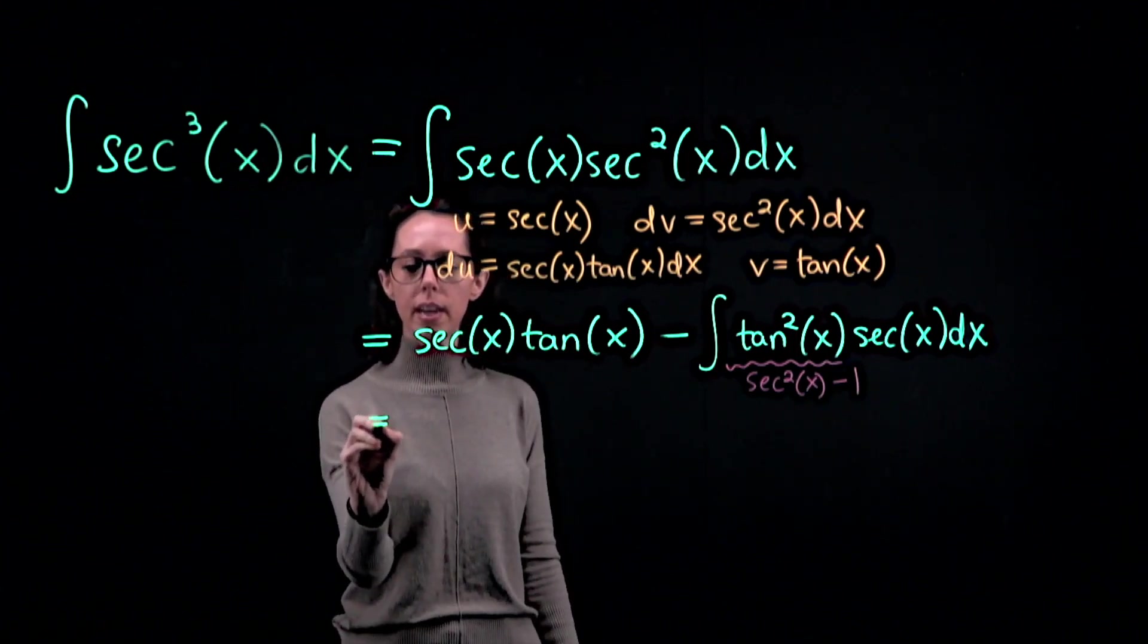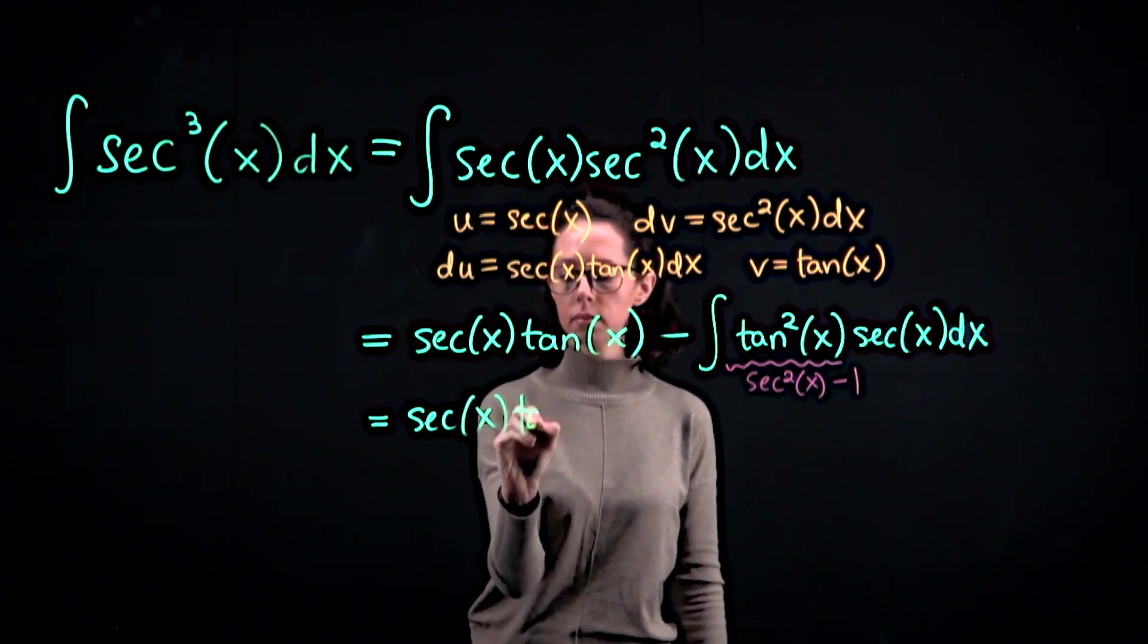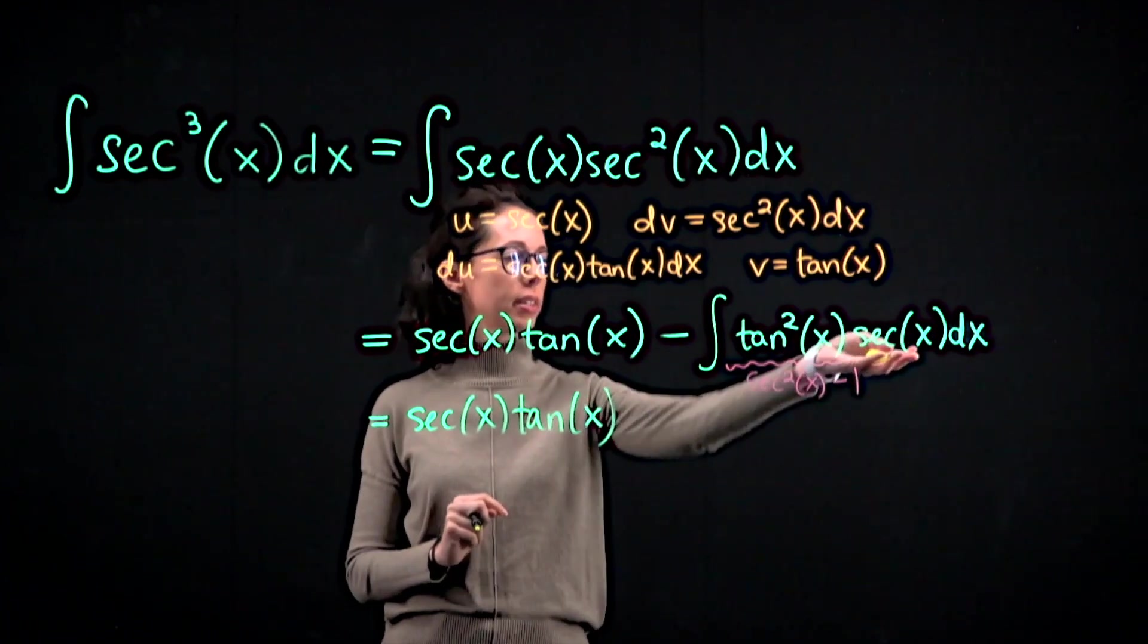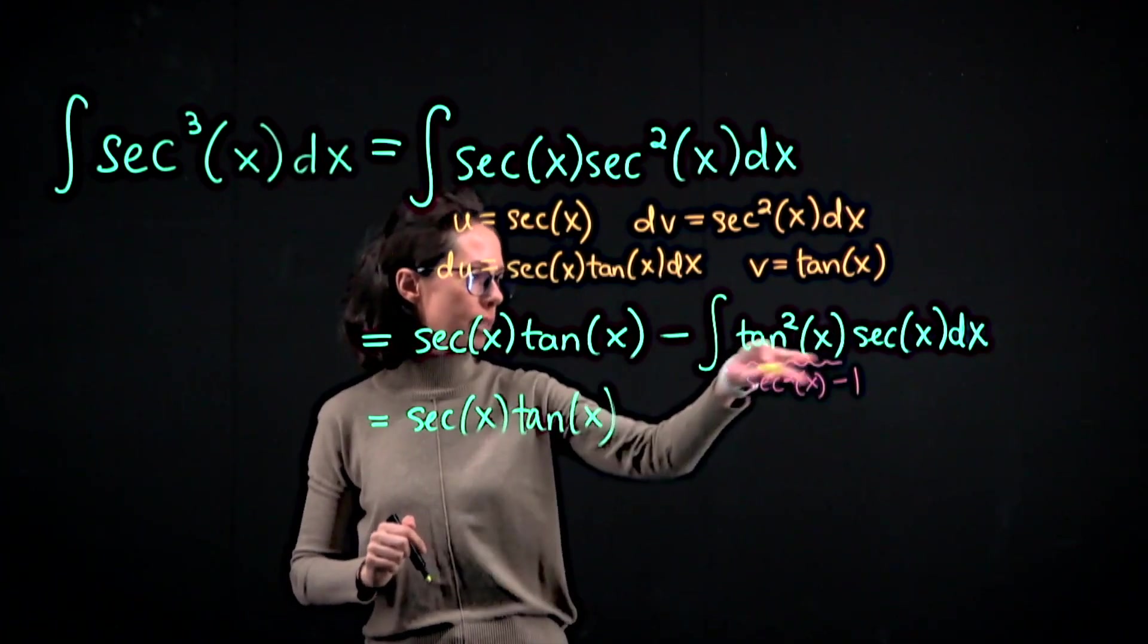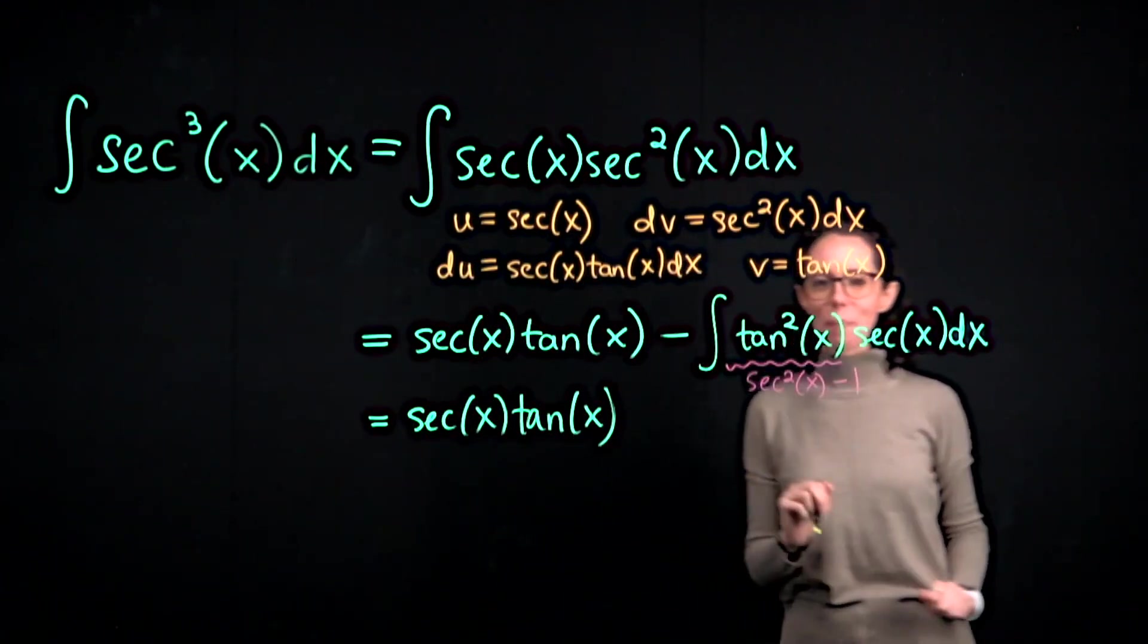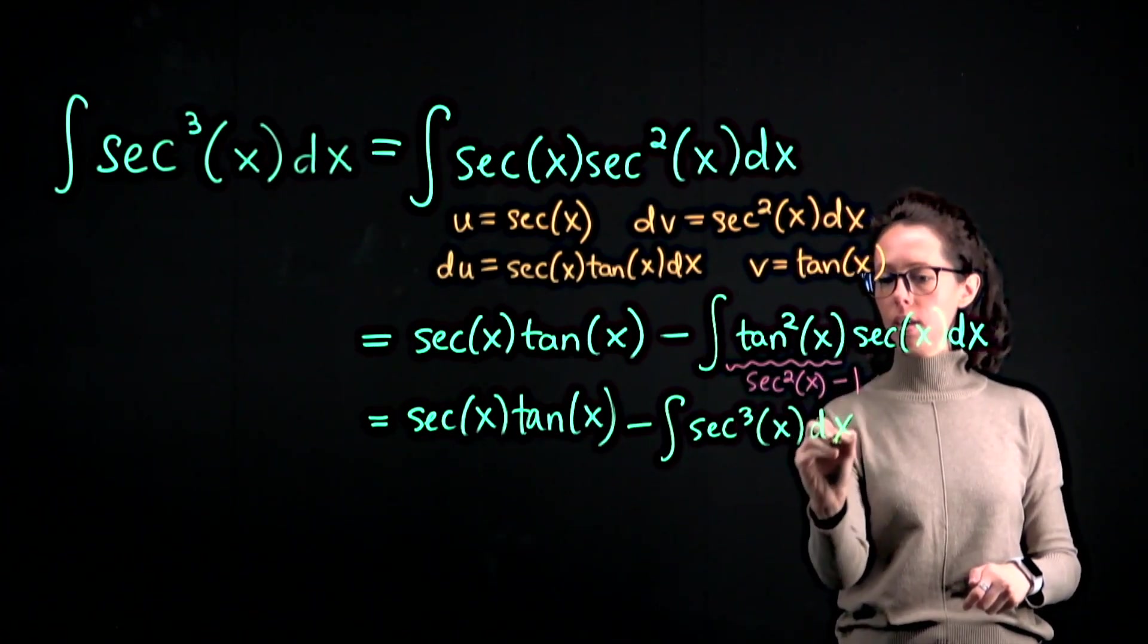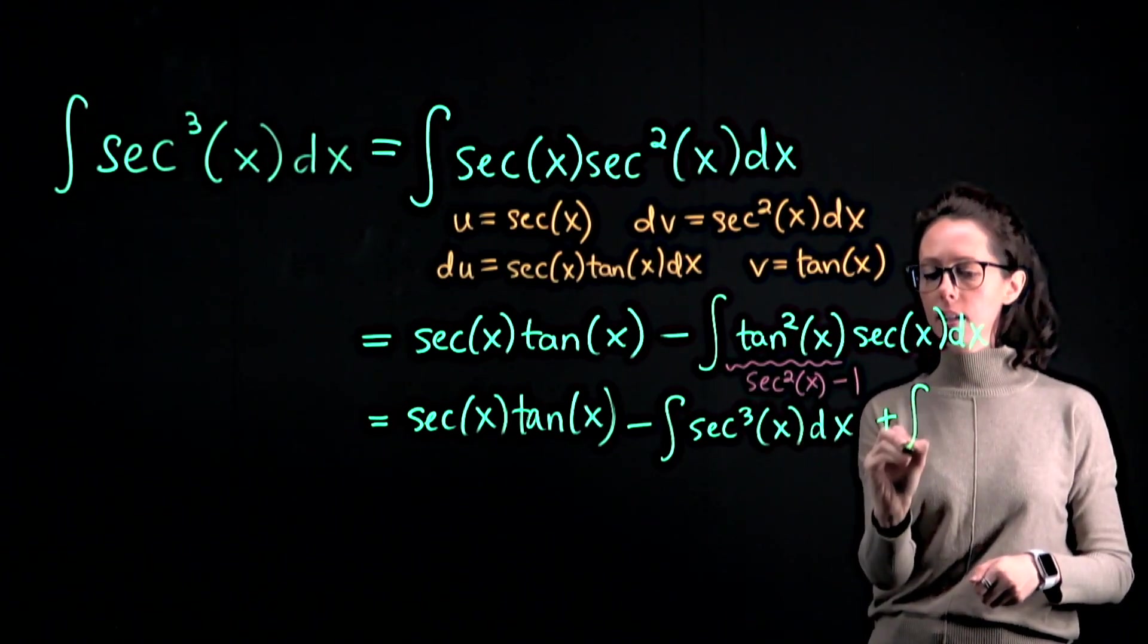All right, so down to the next line we have secant tangent, and then I'm going to distribute this secant of x into this expression. So this whole thing is secant squared x minus one times secant. I'm going to end up with two separate terms separated by the subtraction. I'm going to break this apart and distribute the negative. The first part is going to be minus the antiderivative of secant cubed, and then the second part is going to be minus negative one times secant, so overall plus secant.